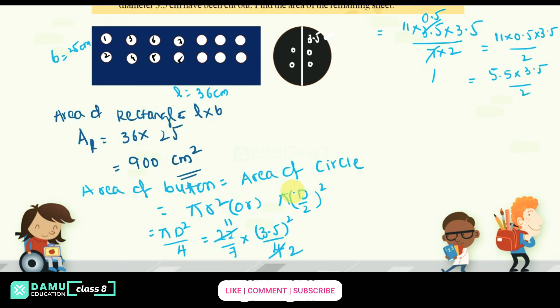So into 3.5, 3.5, that is 19.25 by 2. So what you will get, 19.25 by 2, what you will get 9.625. So like that 9.625 centimeter square.